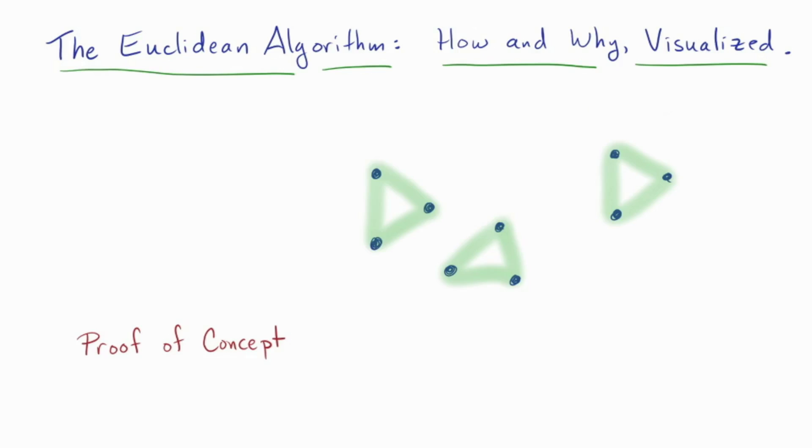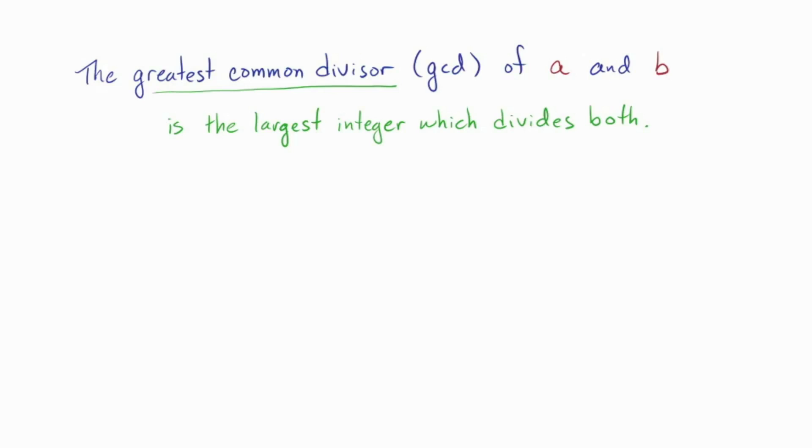We've already talked about the GCD, or greatest common divisor of two integers. It's the largest integer that's a factor or divisor of the two that you've got. So, for example, the GCD of 15 and 12 is the biggest integer dividing both of them, namely 3.